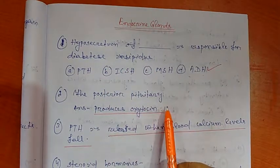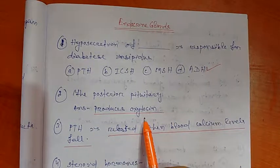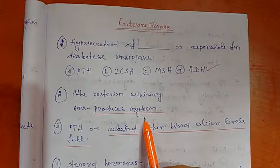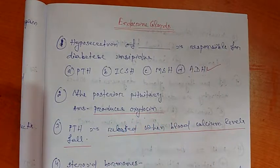The posterior pituitary produces oxytocin. Posterior pituitary produces two hormones. One is vasopressin, other is oxytocin. So here, oxytocin.